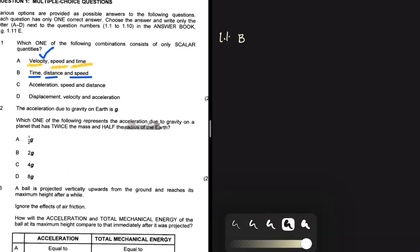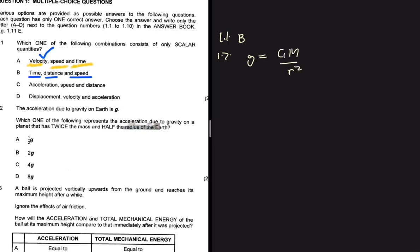Question 1.2 says the acceleration due to gravity on Earth is g. Which of the following represents the acceleration due to gravity on a planet that has twice the mass and half the radius of the Earth? We know that gravitational acceleration g is proportional to mass divided by r squared.